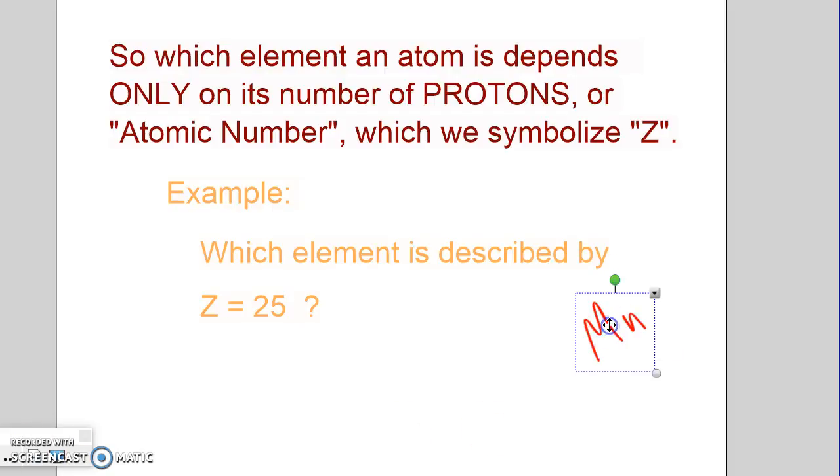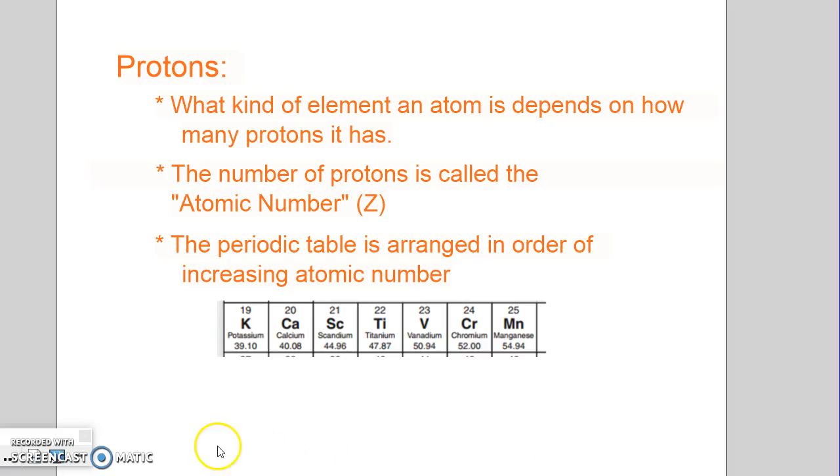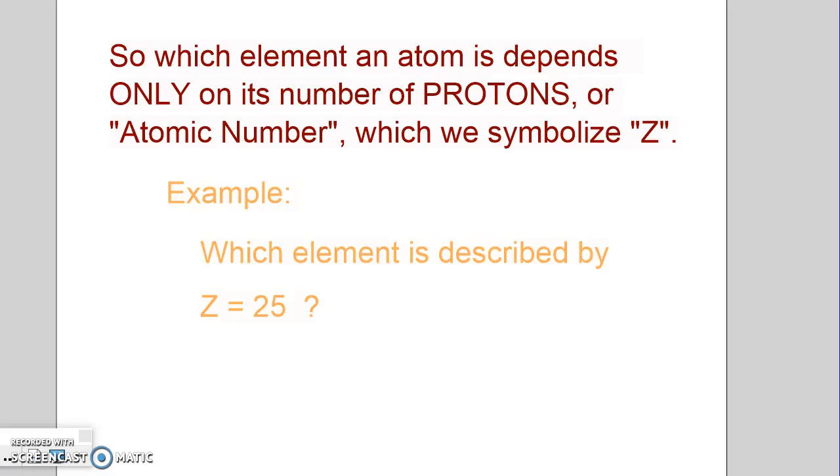So here's an example. Oh, it gave away the ending. Hopefully you didn't see that. Oh, I should probably redo this, but it's all right. Which element is described by Z equals 25? Well, we go back here. 25, Z equals 25, that means the atomic number is 25. Well, that'd be this guy right here. That's manganese. So MN was the answer.